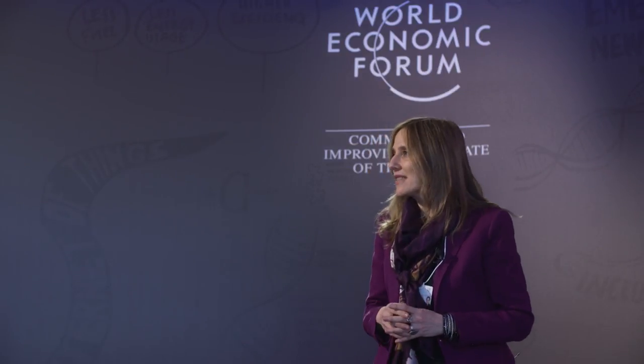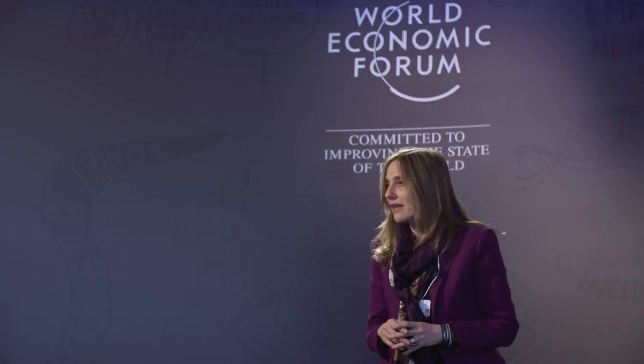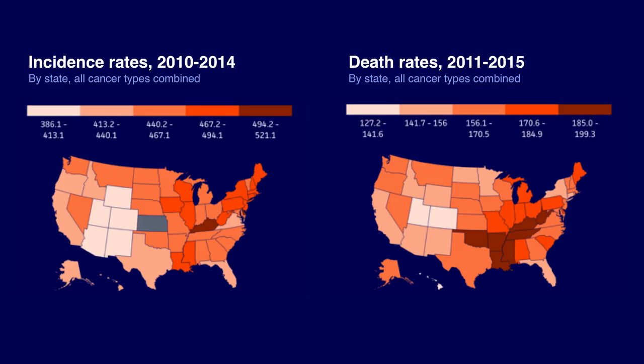Machine learning can solve three fundamental problems in cancer care, and the first one is access to care. Today, patient survival rate is a function of their geographical location. What you see here is a map of the United States, and there is a very weak correlation between the number of occurrences of cancer and the mortality in a given state.